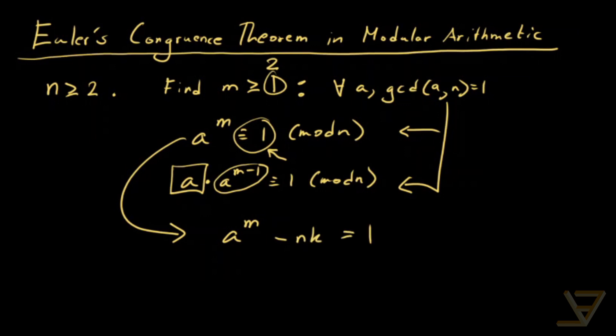If the gcd of a and n is greater than 1, that would divide this side and so g would divide 1. That's impossible because then g would equal 1.